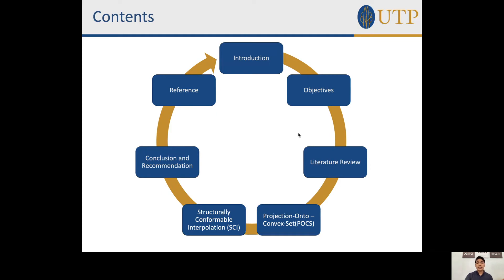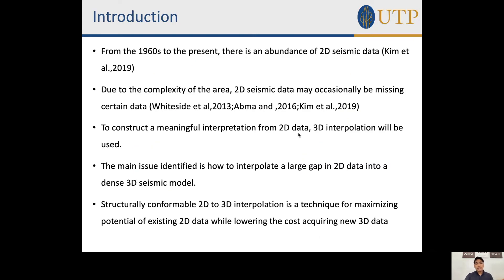For the introduction: from the 1960s to the present, there is an abundance of 2D seismic data. Due to the complexity of the area, 2D seismic data may occasionally have missing data. In order to construct a meaningful interpretation, 3D interpolation will be used. The main issue is identifying how to interpolate a large gap in 2D data into a dense 3D seismic model. Structurally conformable 2D-to-3D interpolation is a technique for maximizing the potential of existing 2D data while lowering the cost of acquiring new 3D data.